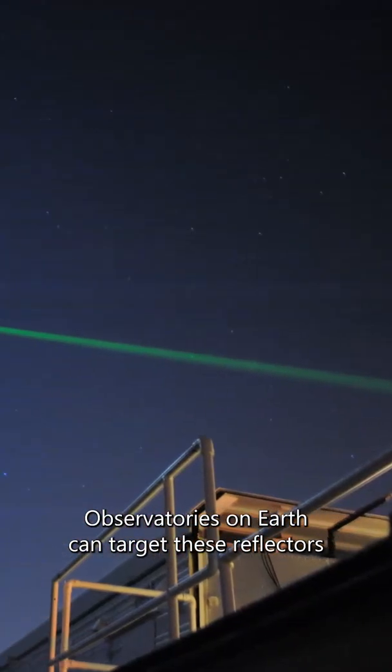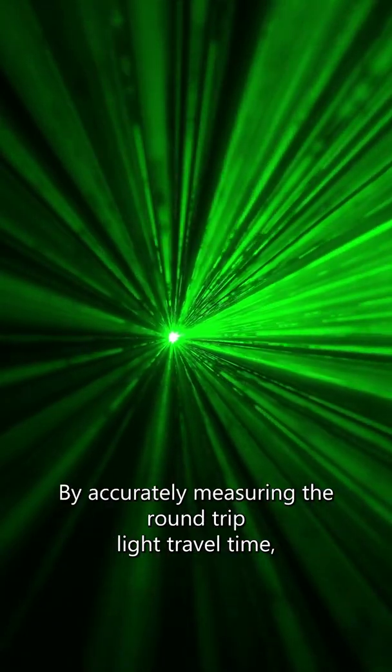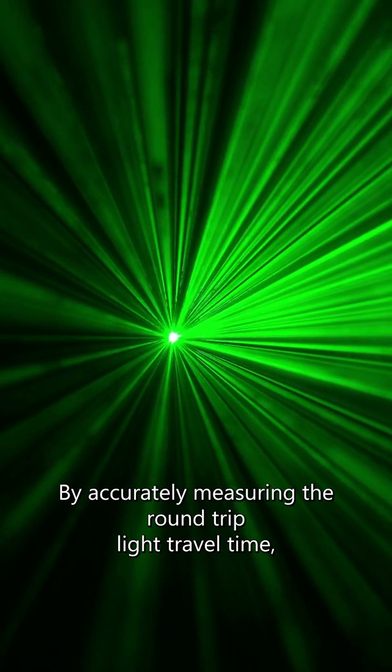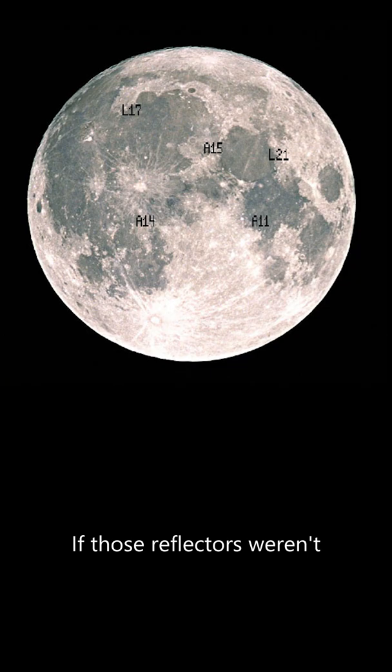Observatories on Earth can target these reflectors and then send pulses of laser light to the Moon and back. By accurately measuring the round-trip light travel time, the distance from the Earth to the Moon can be calculated.